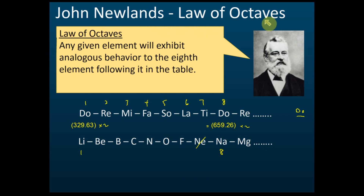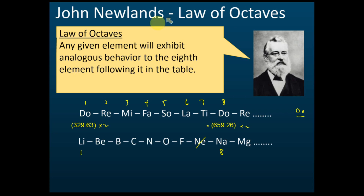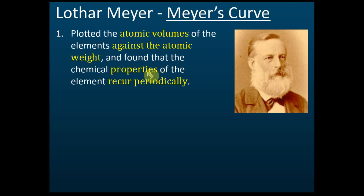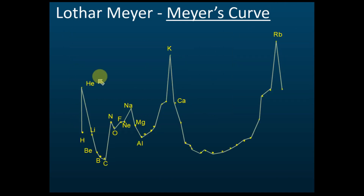Next is Lothar Meyer. What he did was plot a graph of atomic volumes against atomic weight — the volume of atoms against their mass. He found something similar to Newlands: elements show periodic chemical and physical properties. He found that certain properties, especially chemical properties, recur periodically. This graph is known as Meyer's curve.